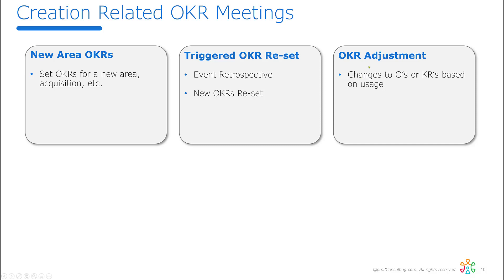The third creation category is a mid-quarter need to adjust OKRs. Most commonly this happens when you find your key result isn't as good as you'd like. When OKRs are released to a wider audience, more people see them, more ideas surface, and you want to change a key result. You do not do this in a performance meeting — changing a key result requires a different mindset and preparation, so hold it in a separate meeting.